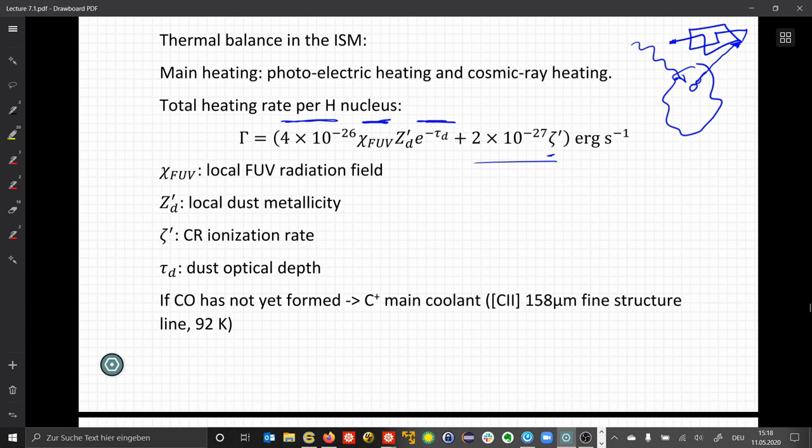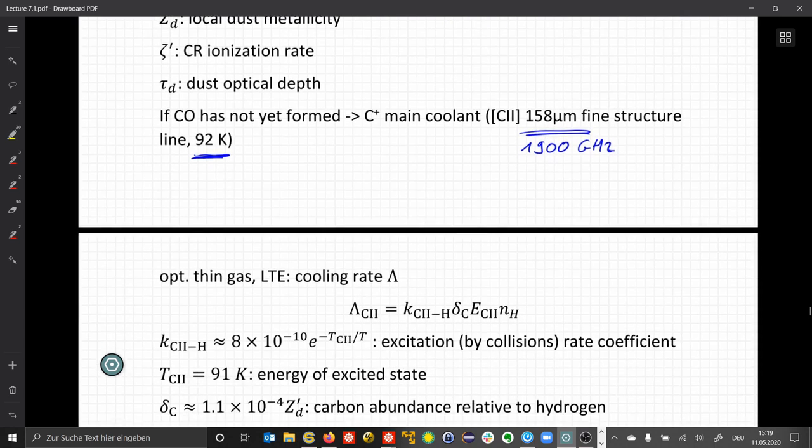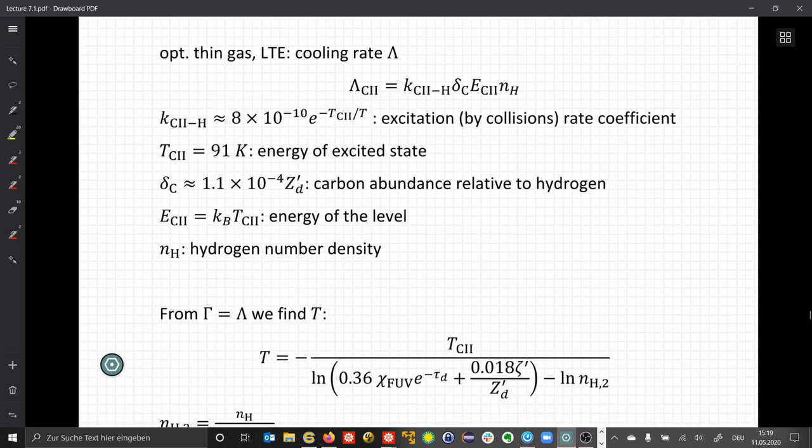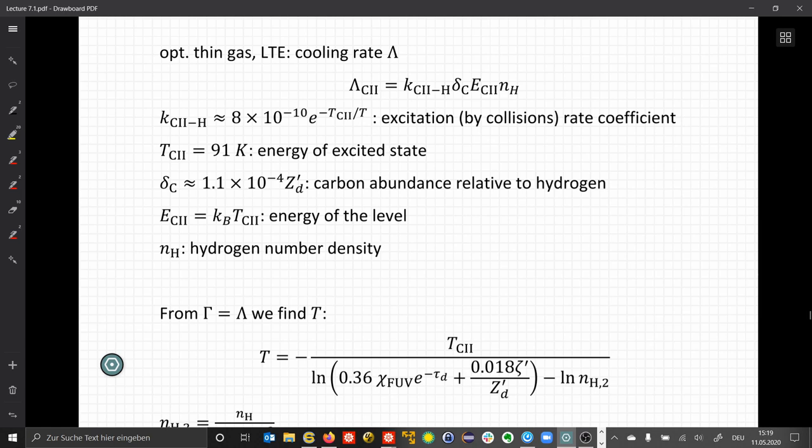If CO has not yet formed, C+ is the main coolant, so all the carbon gas is basically in form of C+, and this emits radiation at 158 micrometer, or 1900 gigahertz. The energy level, this is a two-level system, fine structure line, the upper level corresponds to 92 Kelvin excitation energy. If the gas is optically thin and we have LTE, we can write down the cooling rate as the excitation rate times abundance times the energy per process times the density.